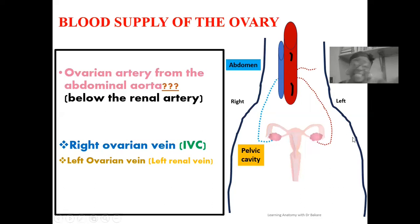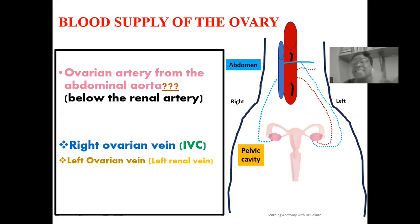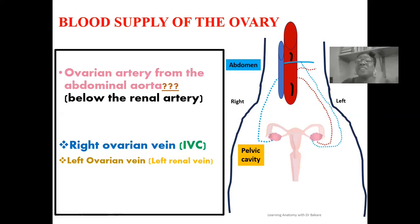On the left side, it is a different scenario. The left ovarian vein, also highlighted in blue, is first drained into the left renal vein. The renal vein then delivers the blood into the inferior vena cava. Because the inferior vena cava is positioned more toward the right side, it is easier for the right ovarian vein to drain directly into it, while the left ovarian vein is forced to drain into the left renal vein before being delivered into the inferior vena cava. At the end, the venous blood from both sides is collected and delivered into the inferior vena cava.